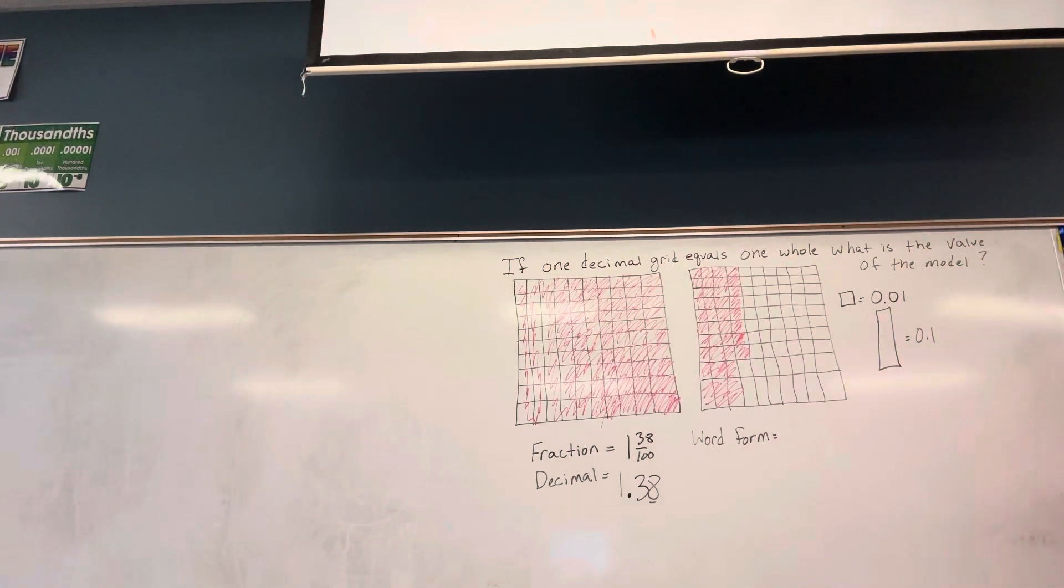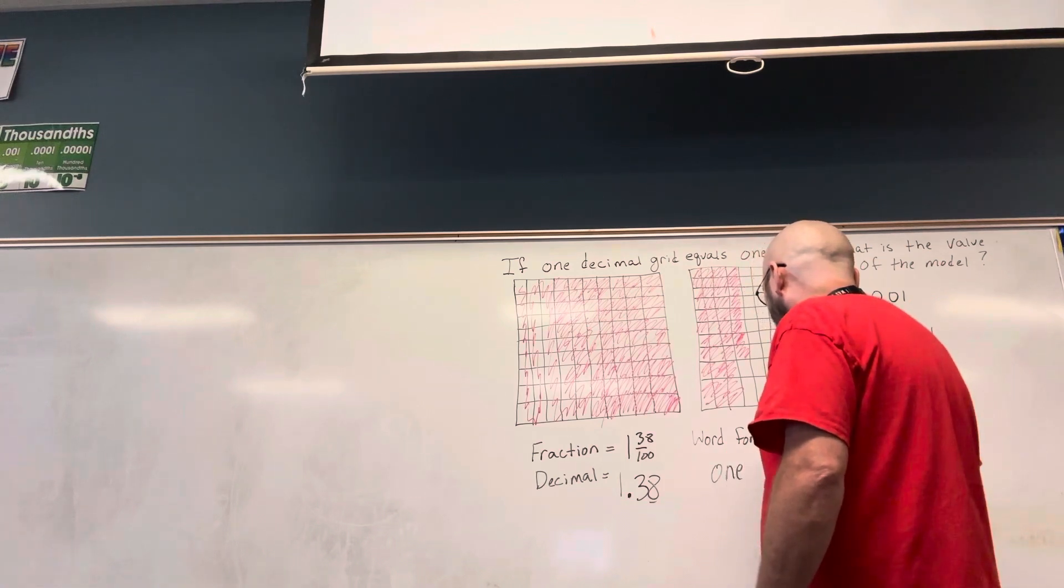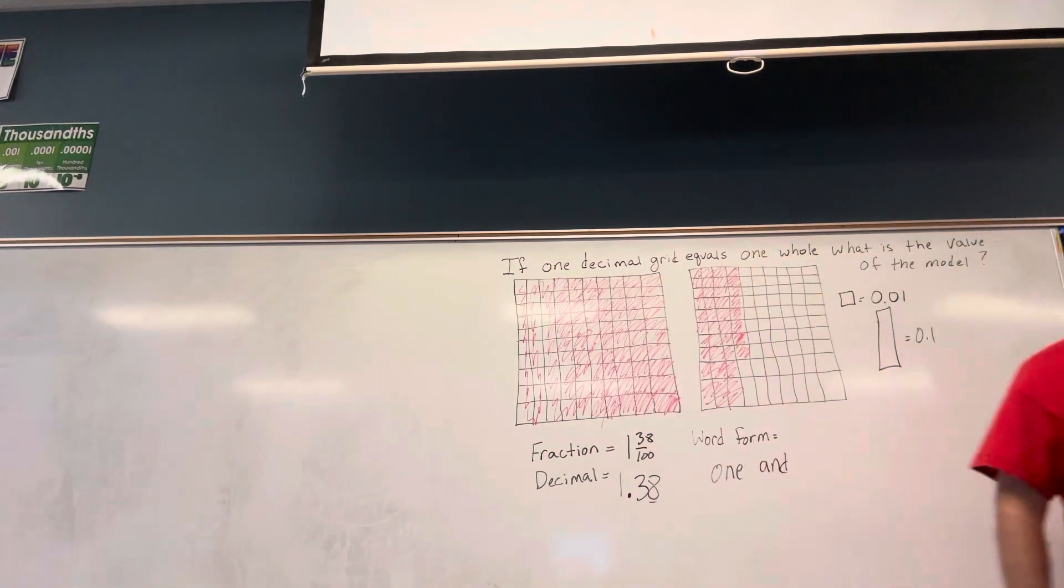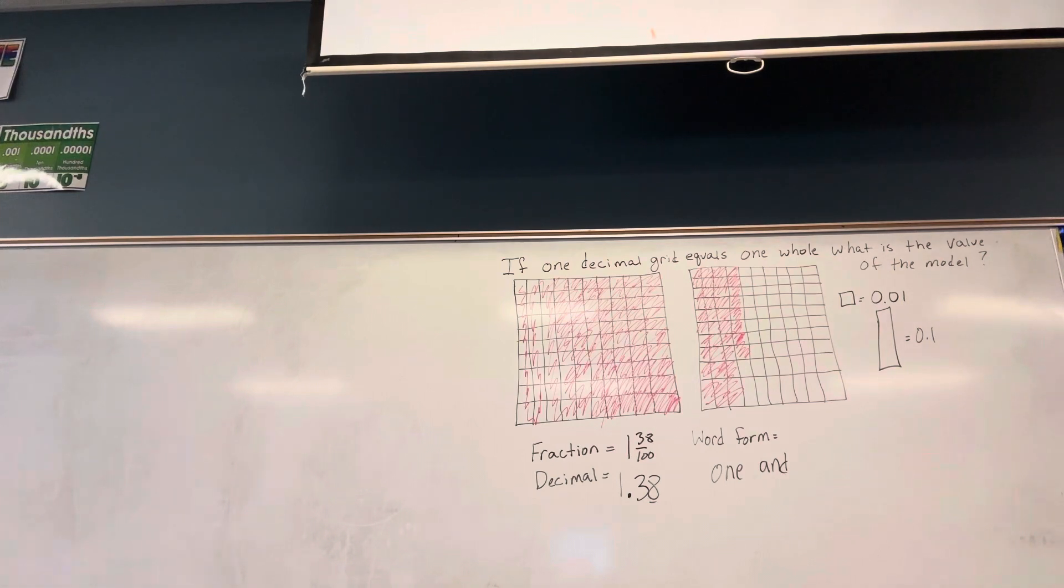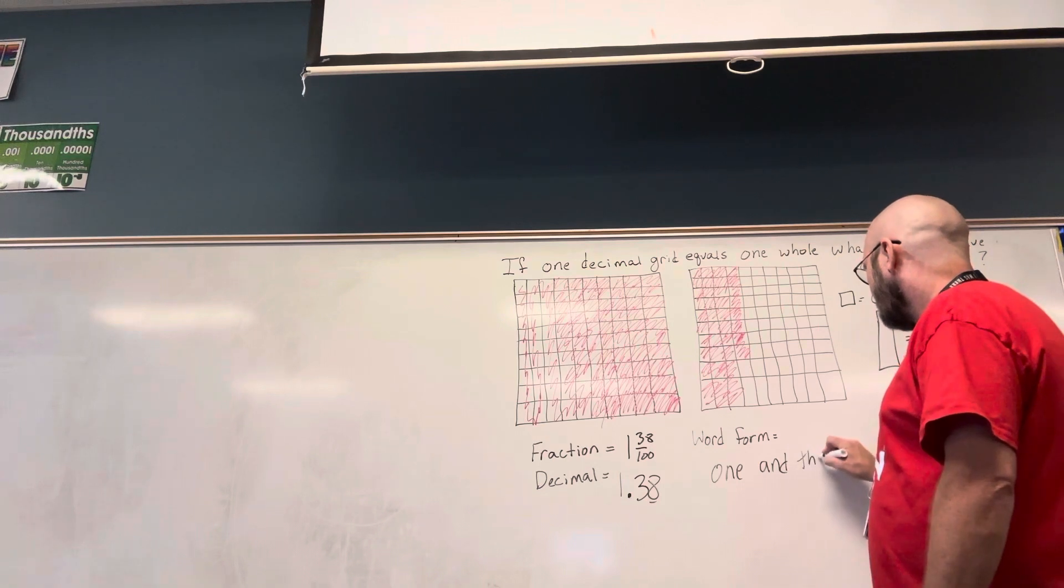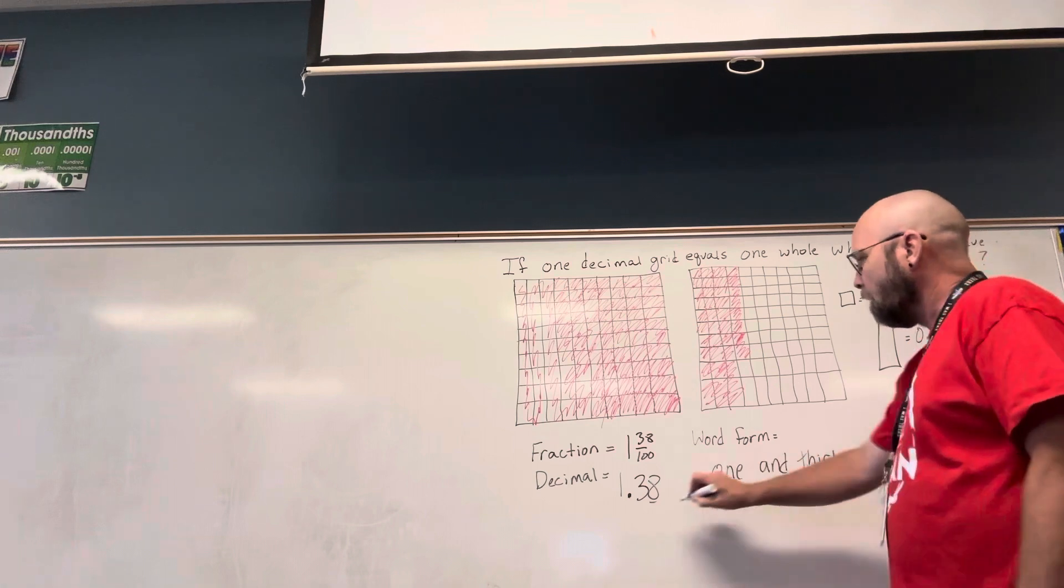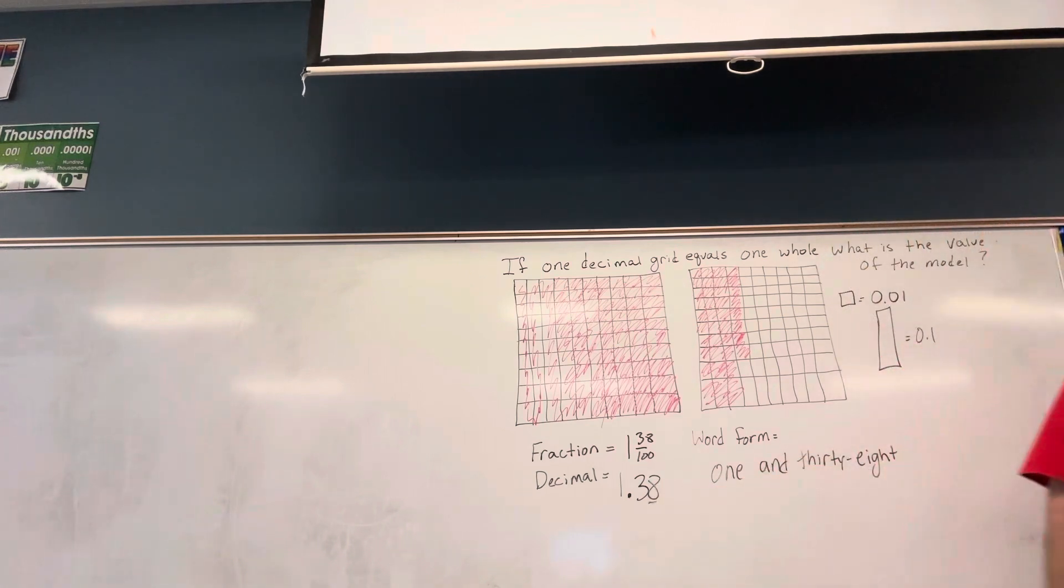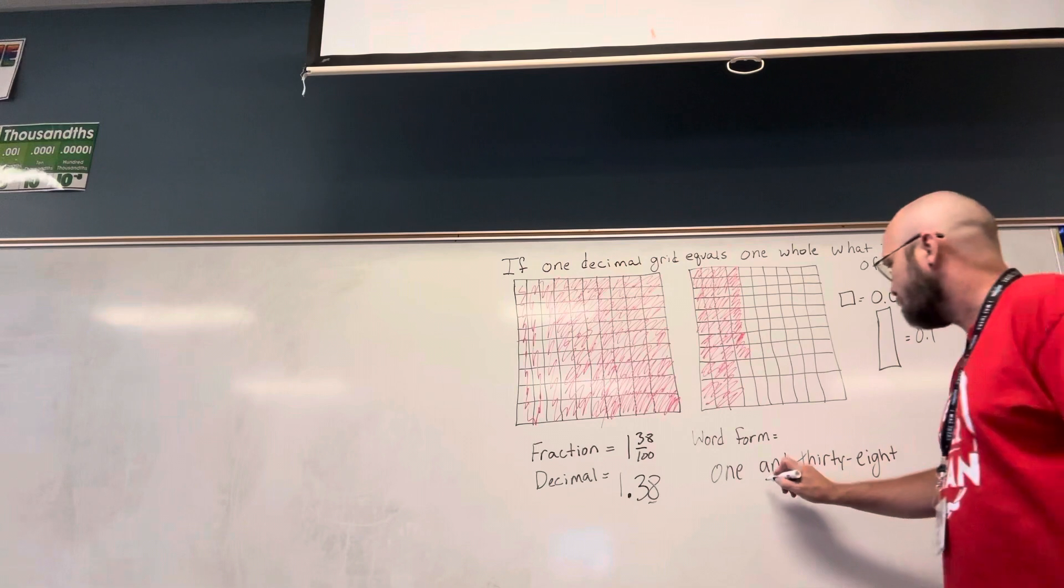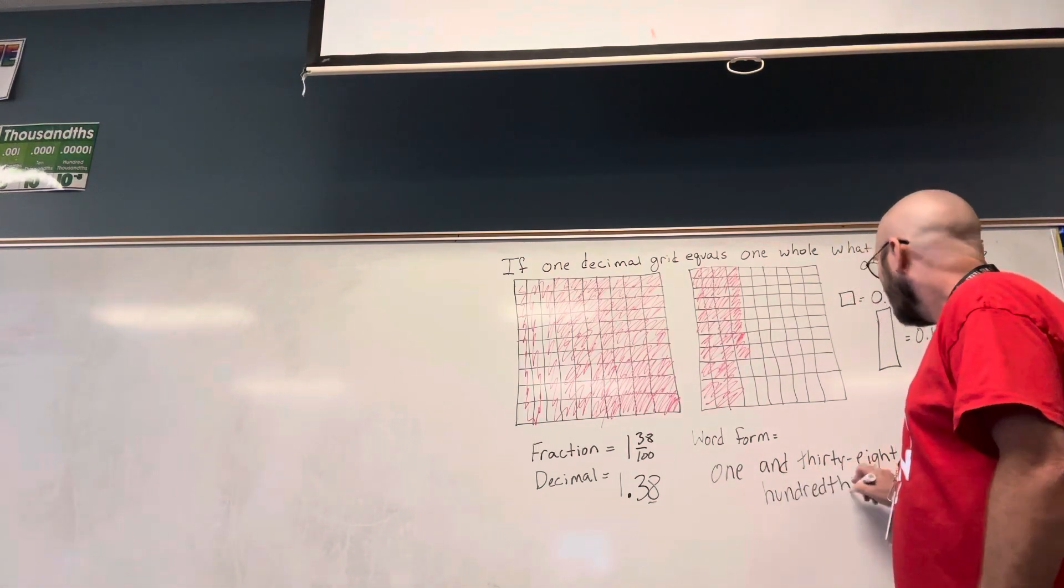That should help you as you do question number one. Now, I have to do it in word form. Well, I have one. And. And always tells me where my decimal point is. It follows right after my whole number. And then, I have thirty-eight. And my last number is in the hundredths place, or my denominator is the hundredths place.